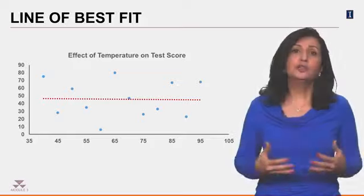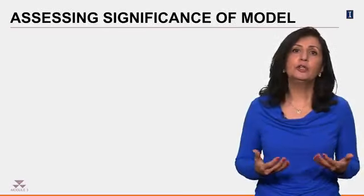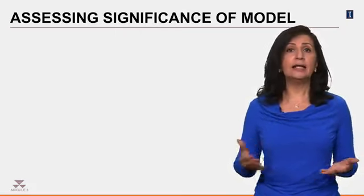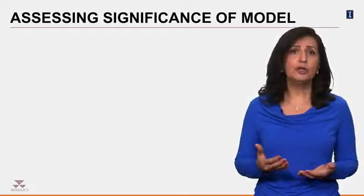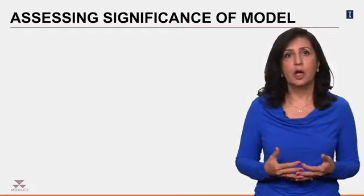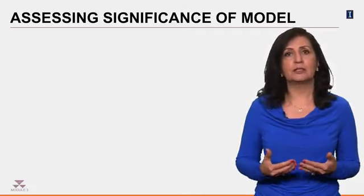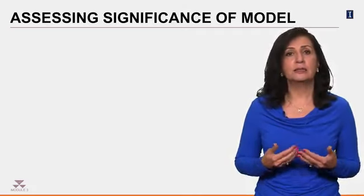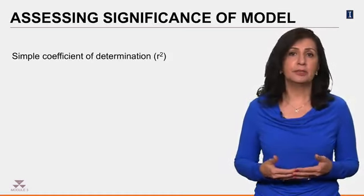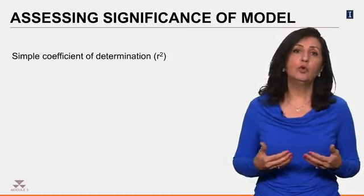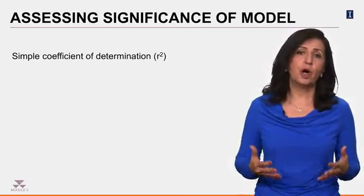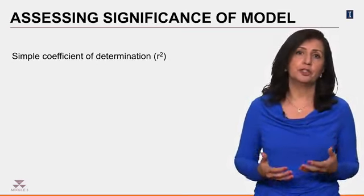We now turn to the question of how useful is a particular regression model? After all, a model that explains 90% of the variation is more useful than one that explains only 10% of the variations. One measure of usefulness of a regression model is the simple coefficient of determination. This coefficient is represented by r square and most of the time it is just called r square and not by its proper name of simple coefficient of determination.